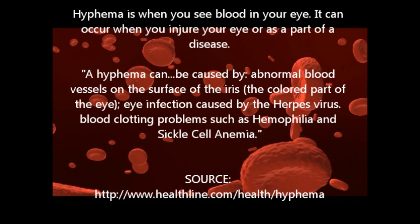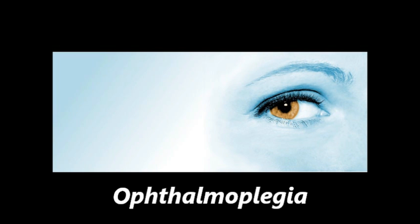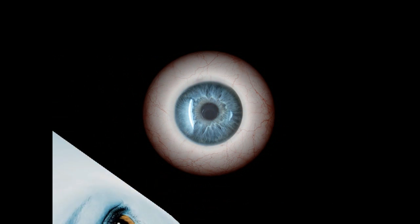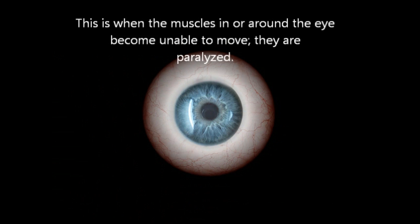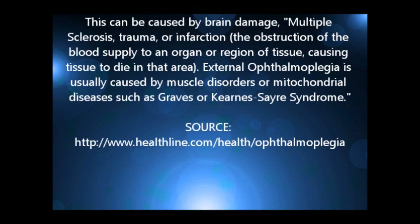Next is ophthalmoplegia. This is when the muscles in or around the eye become paralyzed. This can be caused by brain damage, multiple sclerosis, trauma, or even Graves' syndrome.